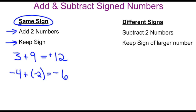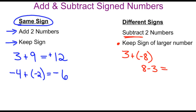Now, if the signs are different, then what we're going to do is actually subtract the two numbers, and our answer will keep the sign of the larger of those two numbers. So for example, if we wanted to add 3 plus negative 8, the signs are different, so we're just going to do 8 minus 3, which gives us 5, and then the bigger number has a negative sign — that's 8 is negative — so that means our answer will be negative.